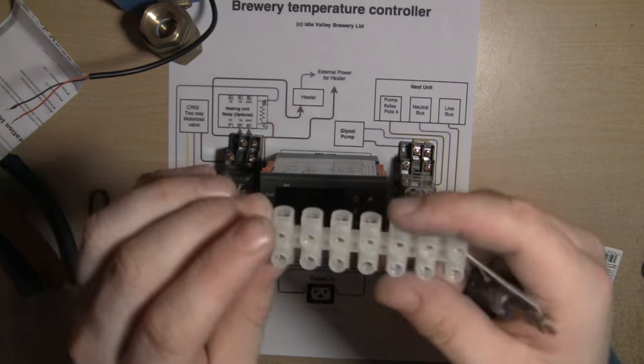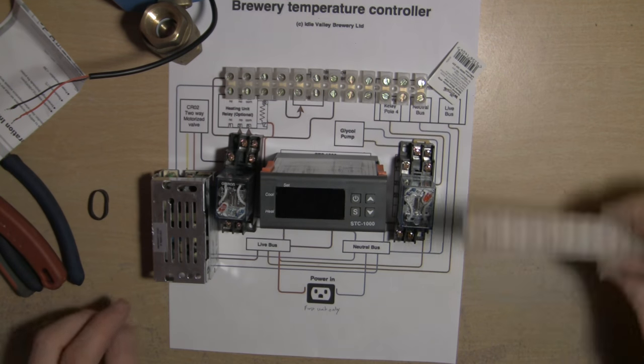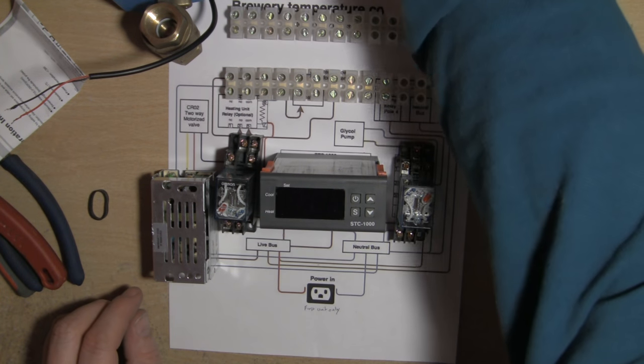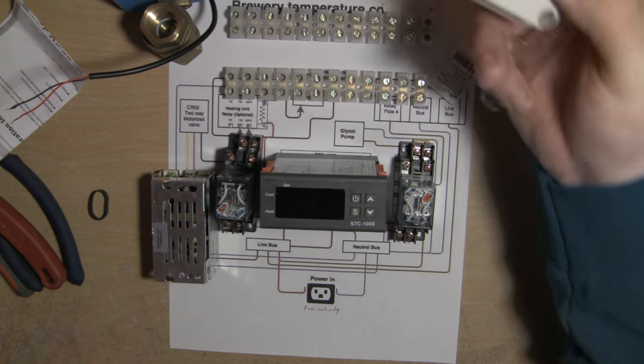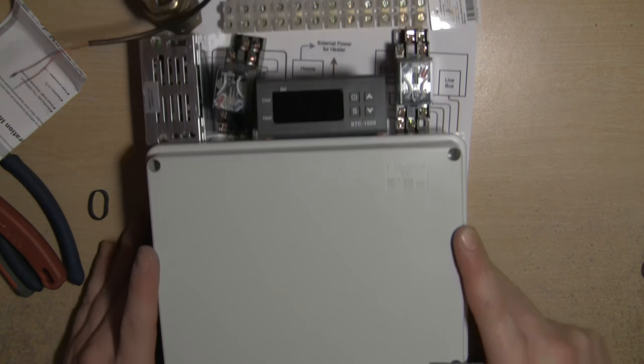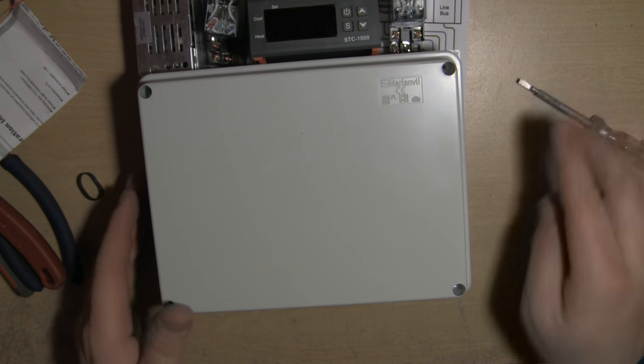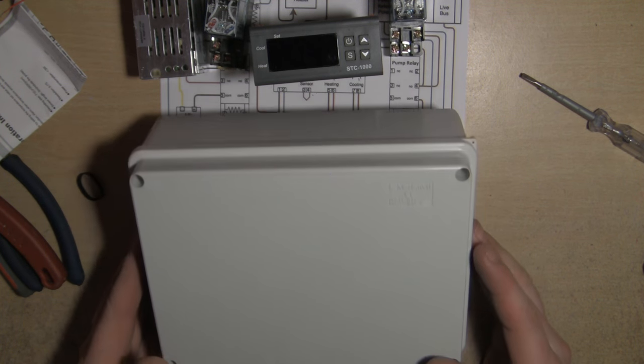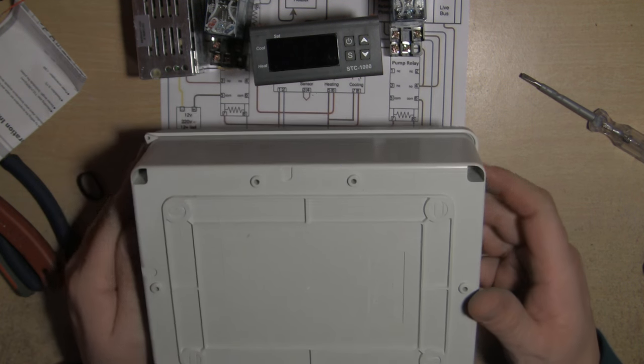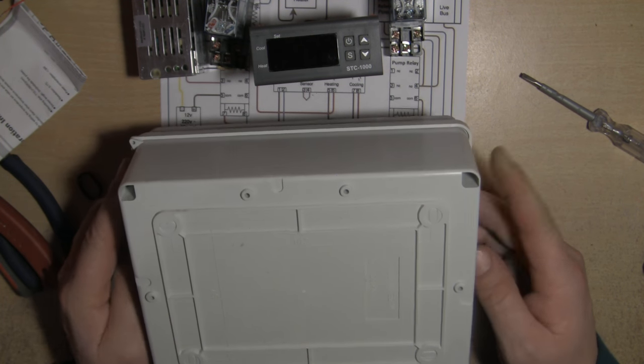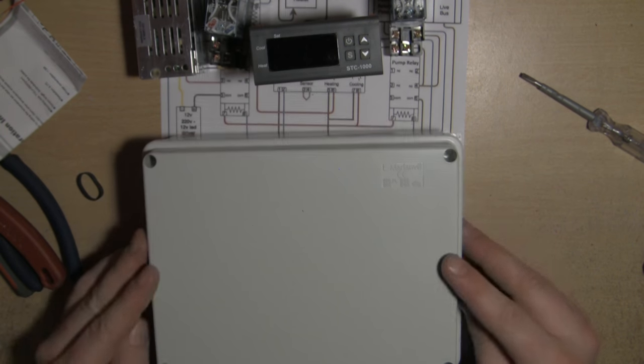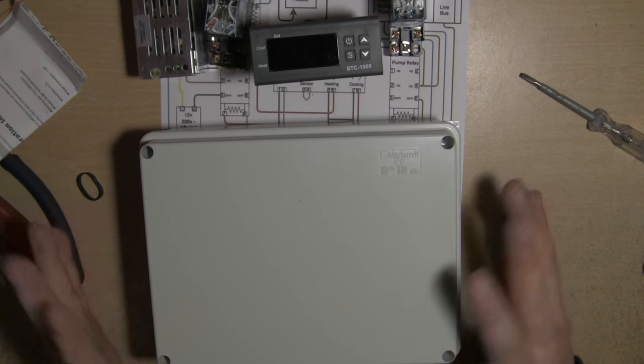Then of course we're going to need a live and a neutral bus bar. All I've done is nip into the local Wilkos or Home Depot or whatever you've got local to you and just picked up some of these terminal blocks.